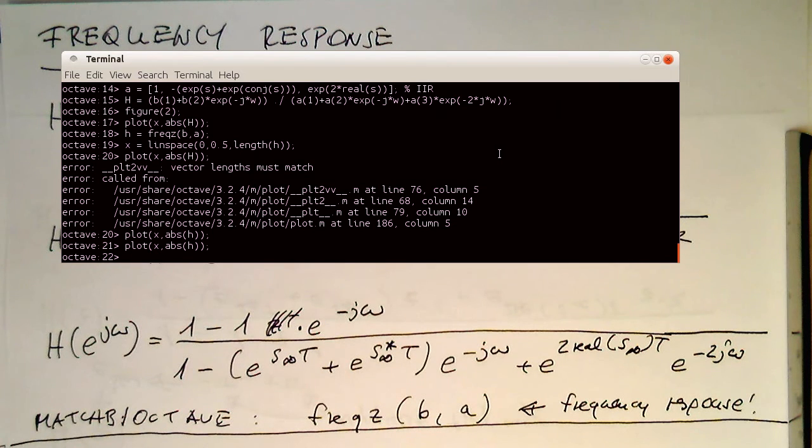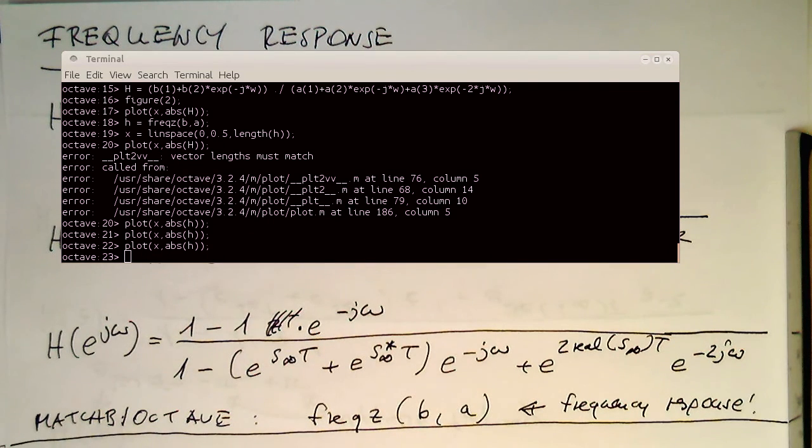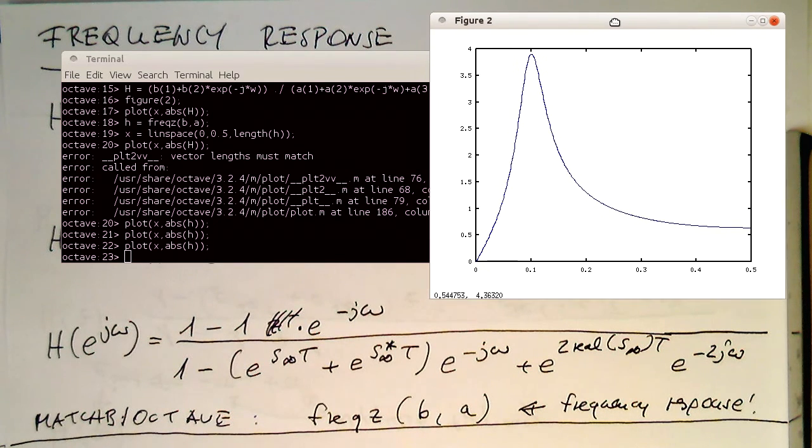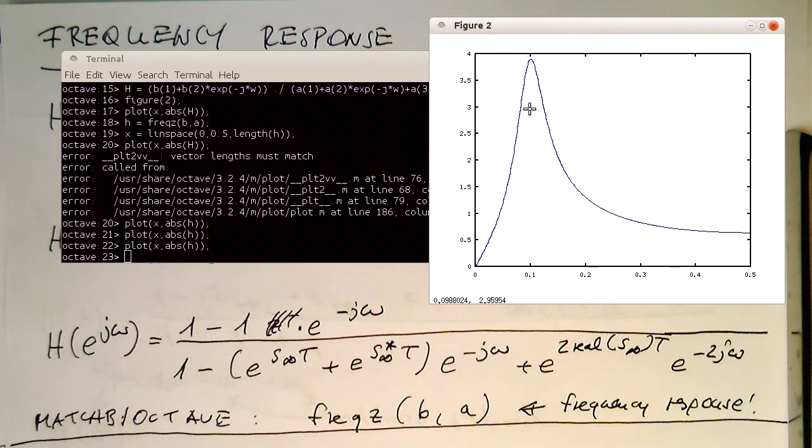So let me close this here, and I do the plot with h here, and pull this on the screen. Then we see the freqz command shows us exactly the same as before.